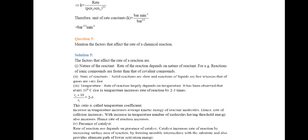Threshold energy is the minimum energy required to bring about a feasible reaction. Next, the presence of a catalyst — the rate of a reaction also depends upon the presence of a catalyst. Catalyst increases the rate of reaction by increasing the surface area, forming an unstable intermediate with the substrate, and providing an alternate path of lower activation energy.